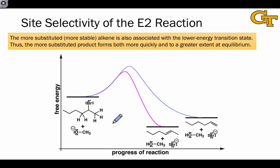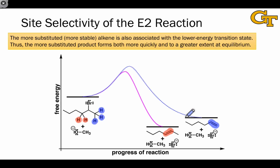One last point about E2 elimination is that it follows Zaitsev's rule: the more substituted alkene is favored over the less substituted alkene in substrates with distinct sets of beta hydrogens. In this substrate, the methyl hydrogens (highlighted in blue) lead to a monosubstituted double bond, which is higher in energy, while the methylene hydrogens (highlighted in red) lead to a disubstituted double bond. The shift in stability between the less and more substituted double bond products also pulls down the transition state energy for the pathway leading to the more stable product. This correlation between an energy difference in products and an energy difference in transition states is referred to as Hammond's postulate.